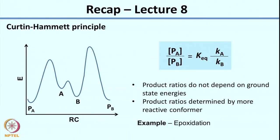Welcome back to the course on reaction mechanisms. We will do a recap of the previous lecture. In the previous lecture, we had looked at the Curtin-Hammett principle. What the Curtin-Hammett principle does is: when you have the possibility of two different products, say PB and PA, from two different conformers A and B, it tells you what dictates the product ratio. According to the Curtin-Hammett principle, the product ratios depend mainly on the difference in activation energies for both of these reactions.